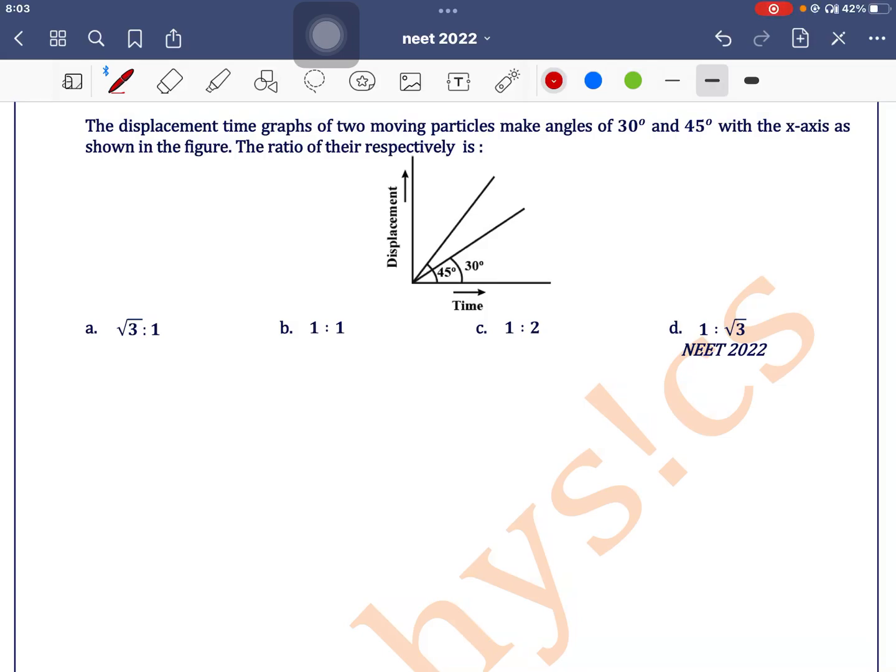The displacement-time graph of two moving particles makes angles of 30 degrees and 45 degrees with the x-axis as shown in the figure. The ratio of their velocities... in the question there's a typing mistake - it is asked to find the ratio of velocities.